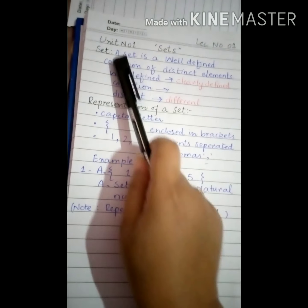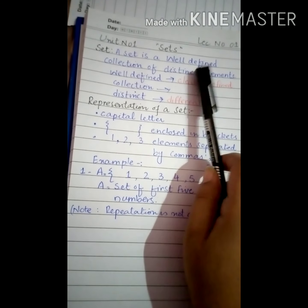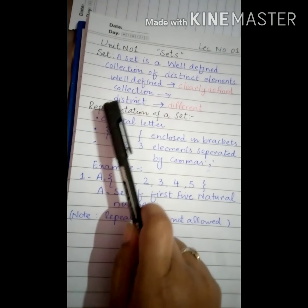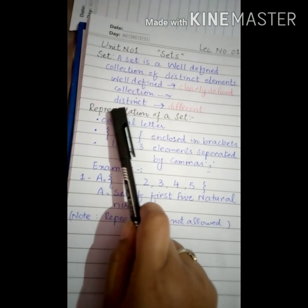This is a set definition. Now we see this definition very carefully. There are three things in it. First of all is well defined, second thing is collection, third thing is distinct.